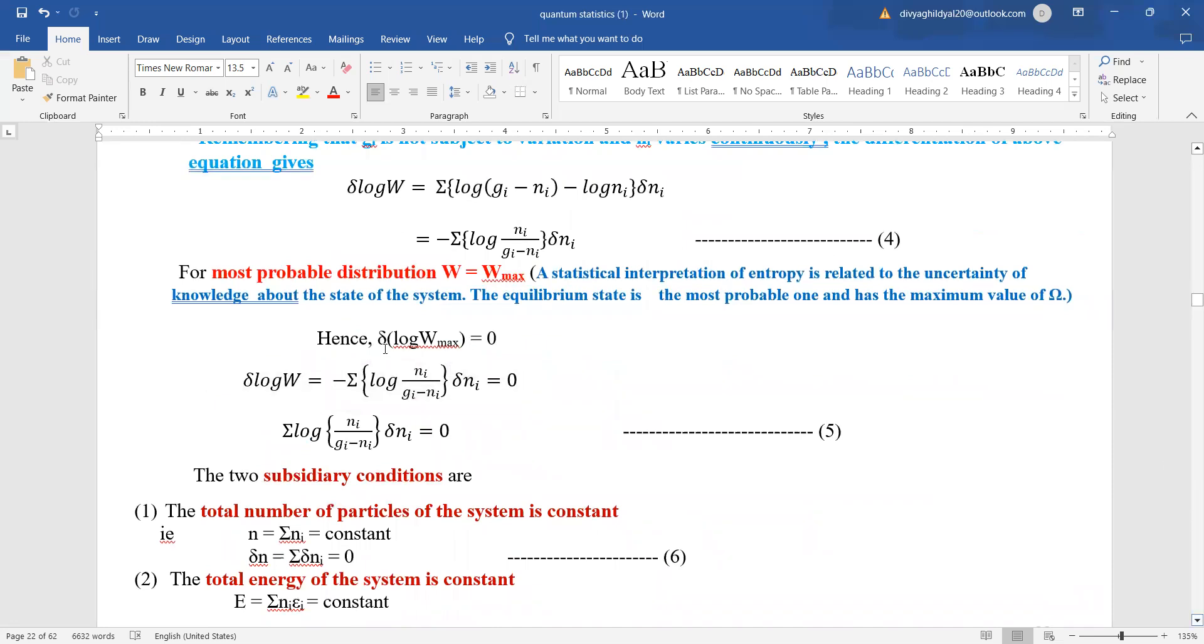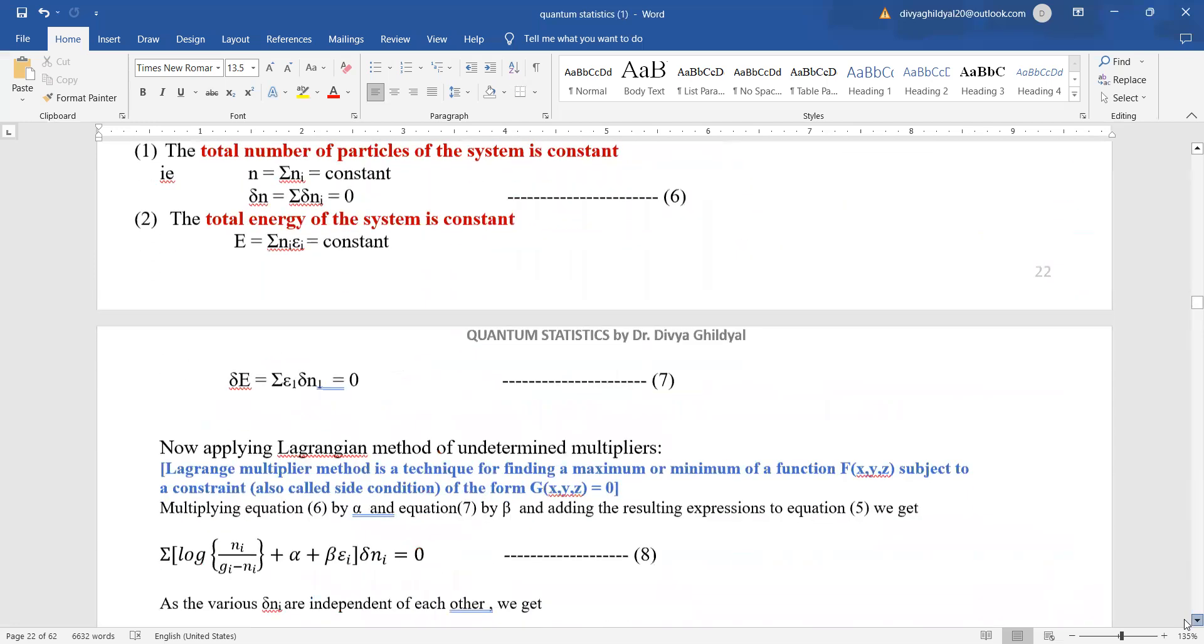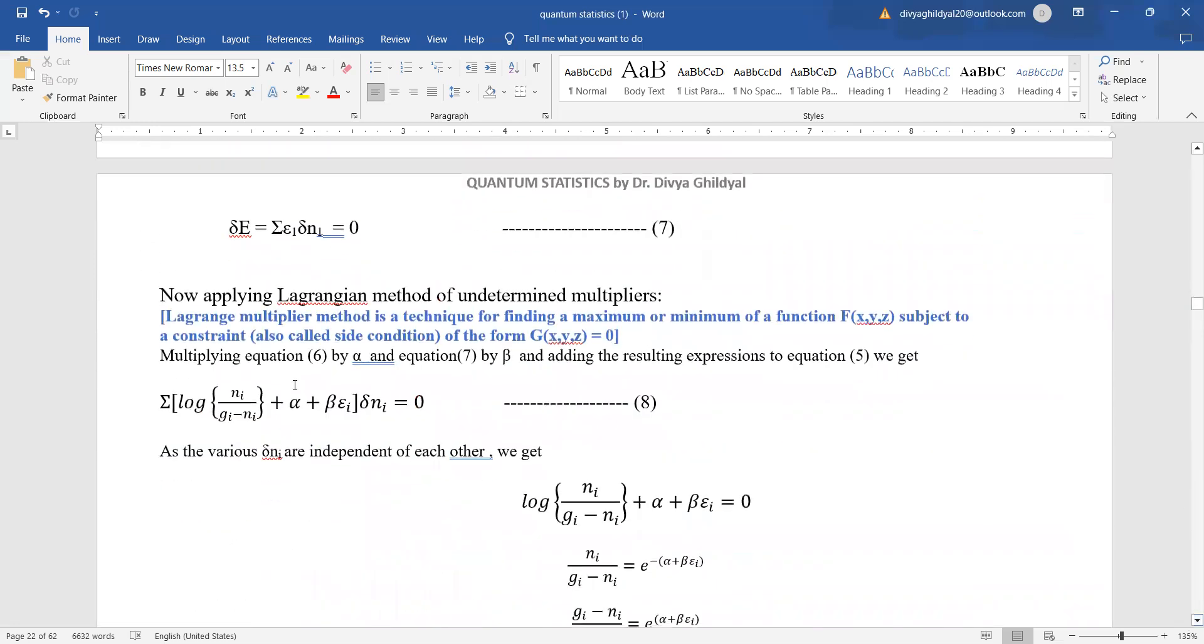Now, log w equals w max. And then there are two subsidiary conditions we also applied in Maxwell Boltzmann. One was that the total number of particles in the system and the total energy will stay constant. So we will put these two conditions there.